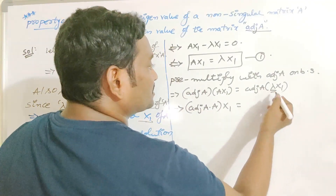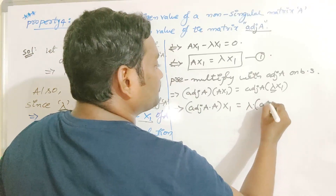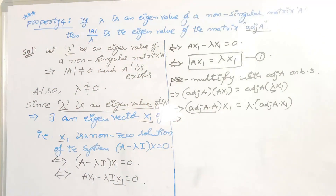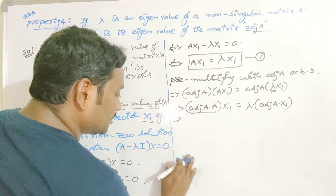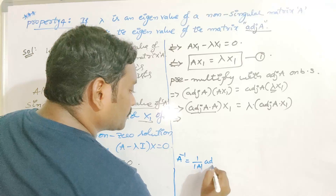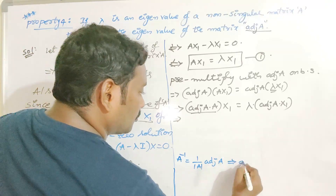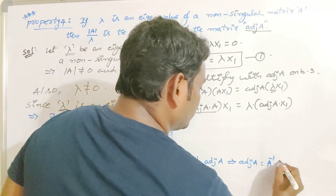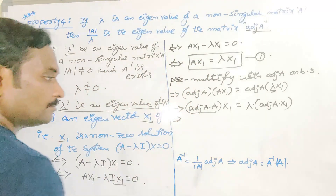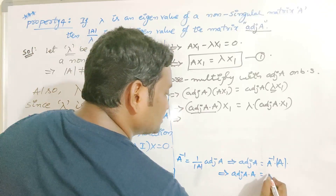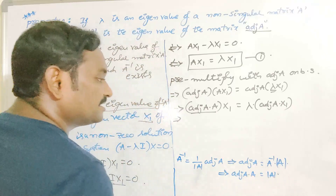Since lambda is a constant, we write it outside: lambda times adjoint(A) times x1. Now we use the formula for adjoint(A) · A from basic matrix knowledge. We know that A inverse equals 1 divided by det(A) times adjoint(A). From this, adjoint(A) equals det(A) times A inverse. Multiplying both sides by A gives adjoint(A) · A equals det(A) times A inverse times A.